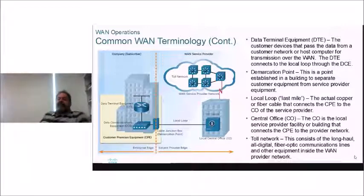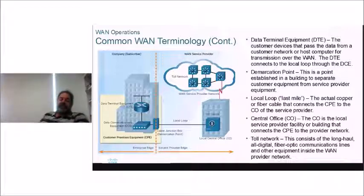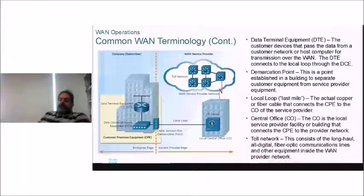The local loop is the link between the central office and your site. The central office is the telephone exchange or equivalent. Beyond that is the provider's toll network — called that because you pay to use it.